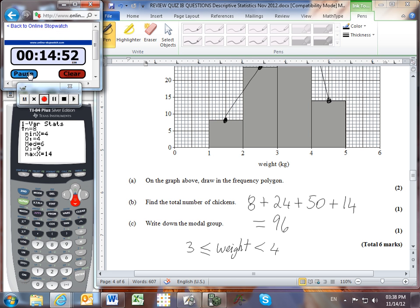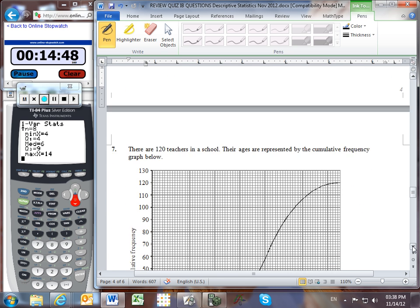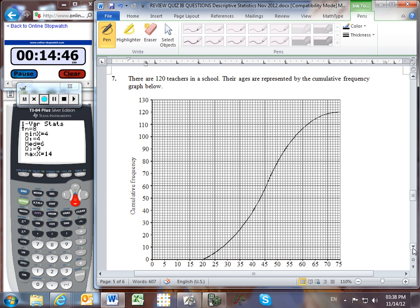Okay, let's look at the last two problems on this review sheet, scrolling down to number seven. We've got 120 teachers in a school. It's important to read that number because the graph actually goes up to 130. But if you look at the cumulative frequency graph, it does actually finish at 120.